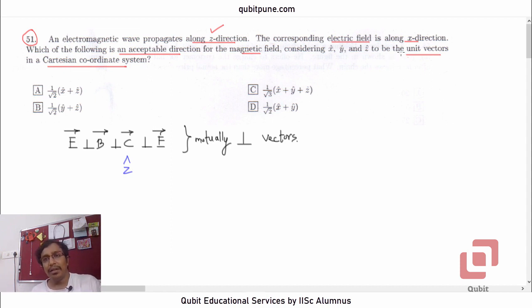They have also said that the electric field is along X direction, and they want us to determine an acceptable direction for the magnetic field.